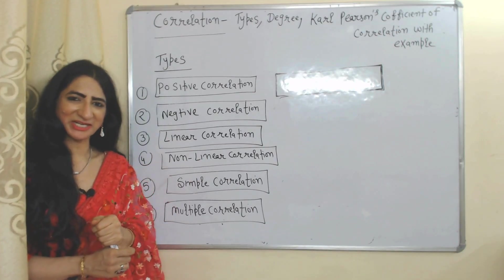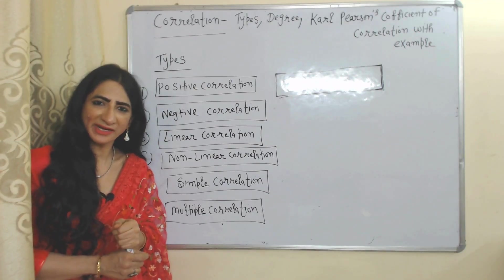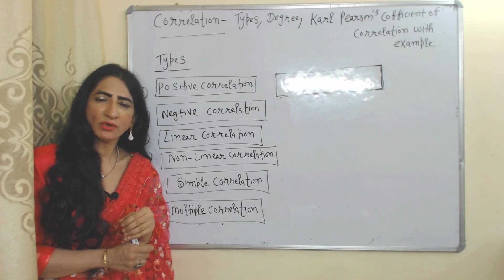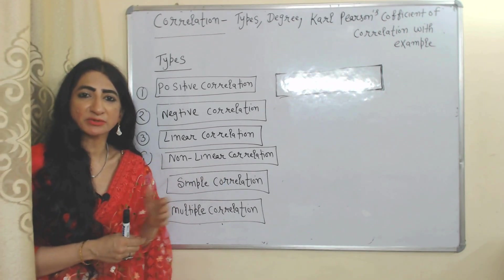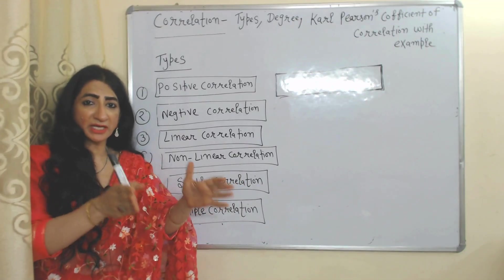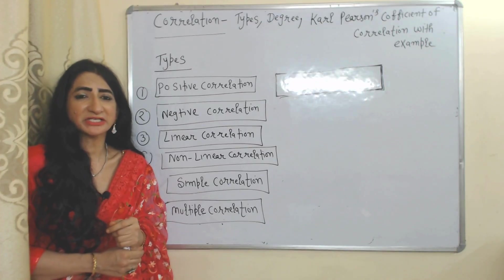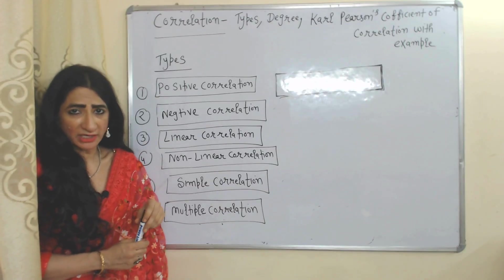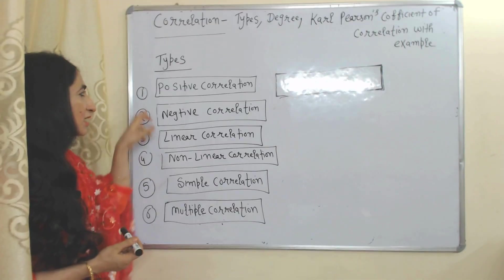What do you mean by correlation? Correlation shows relationship between two or more variables. For example, correlation shows relationship between price and demand, between income and consumption, and also between investment and interest rate.